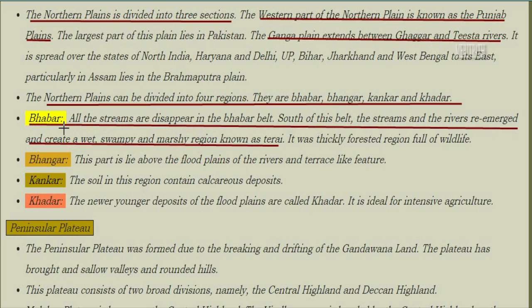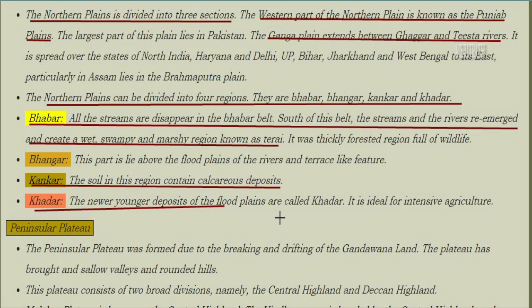All streams disappear in the Bhabar belt. South of this belt, the streams and rivers re-emerge and create a wet, swampy, and marshy region known as the Terai — a thickly forested region full of wildlife. The Bhangar is the older alluvium lying above the flood plains of the rivers, forming terrace-like features.